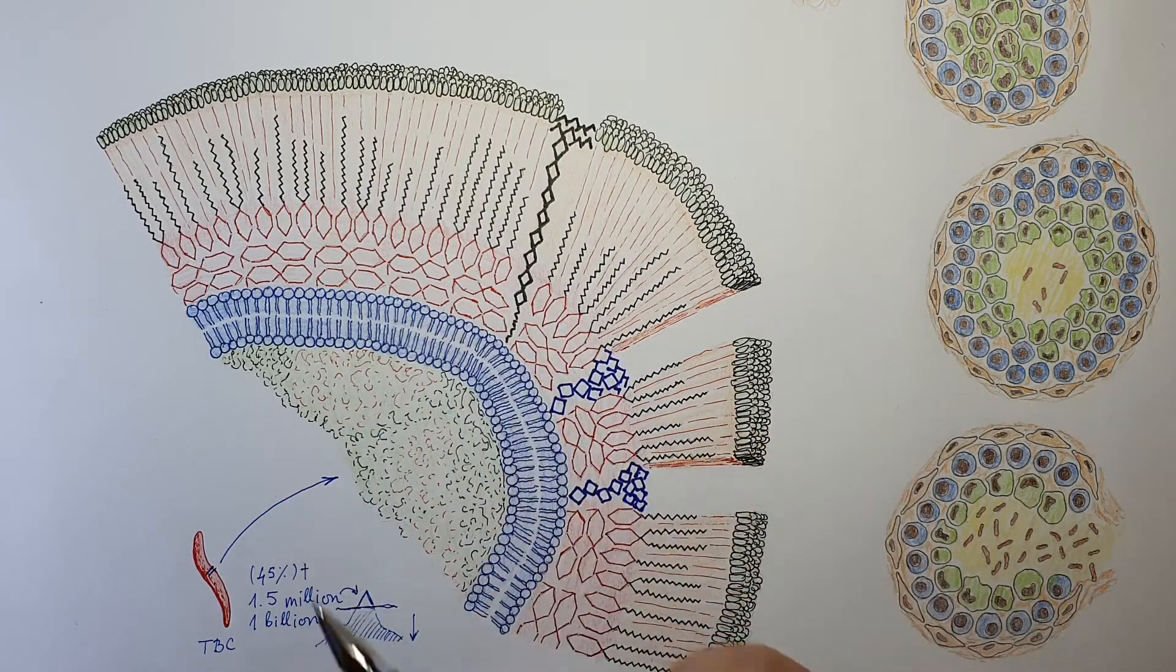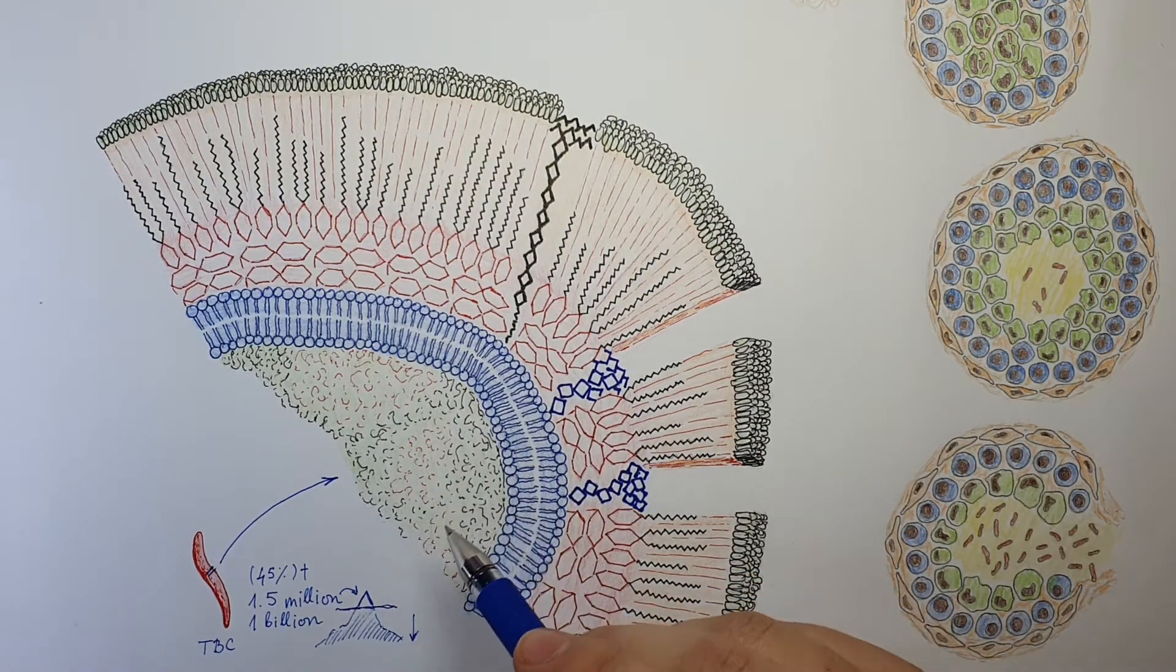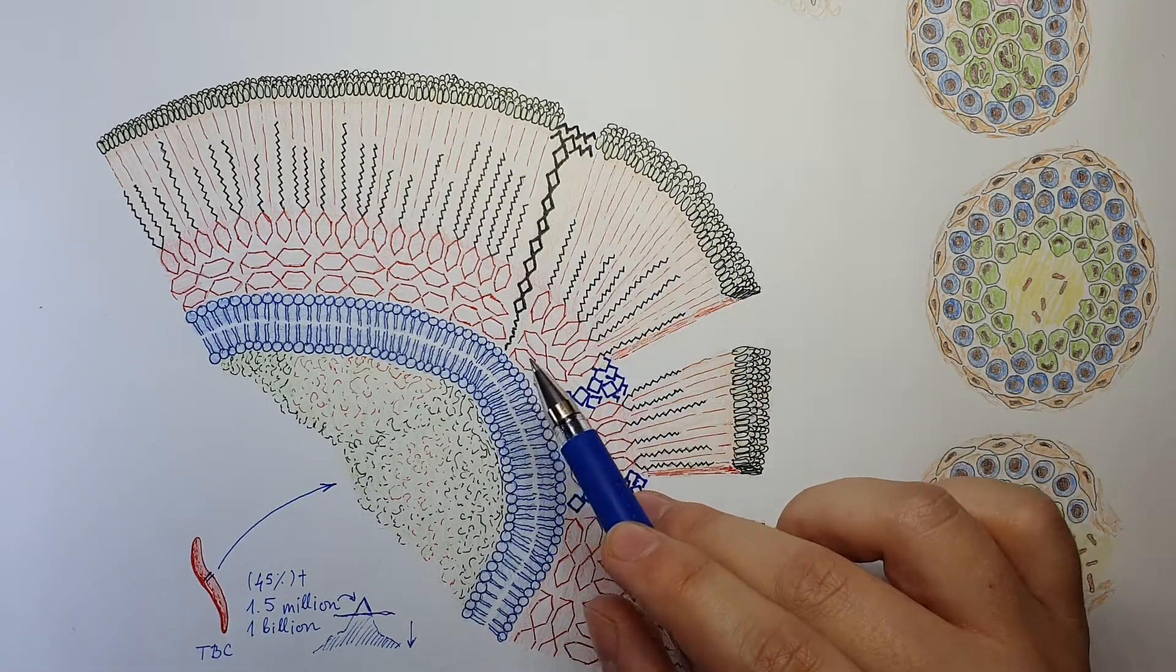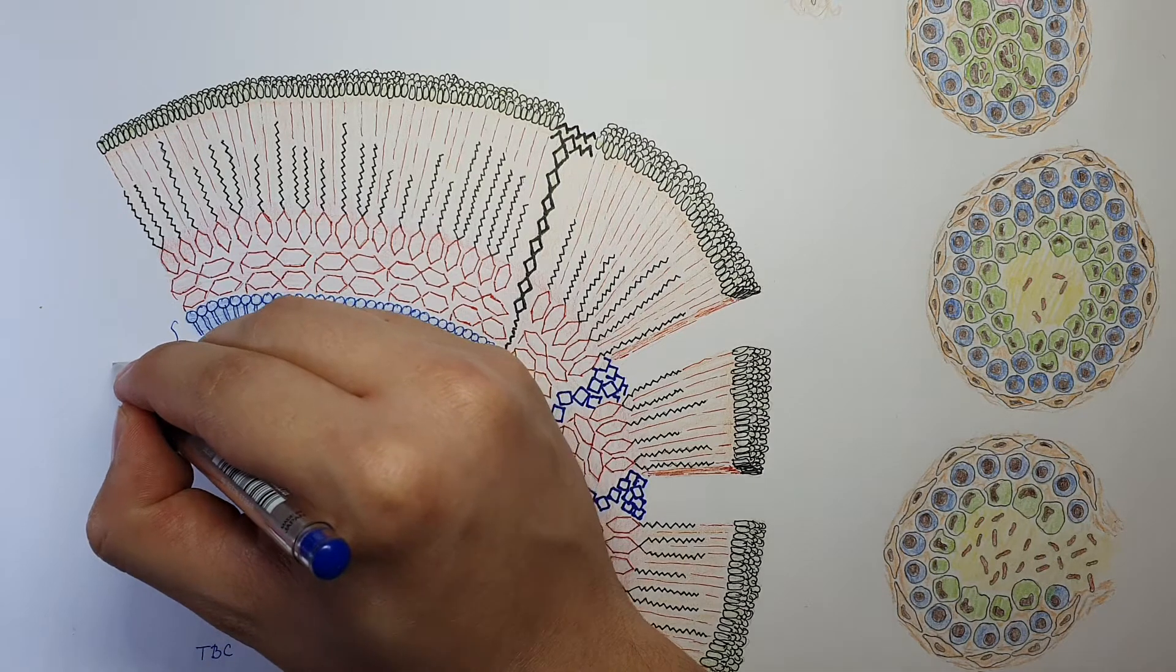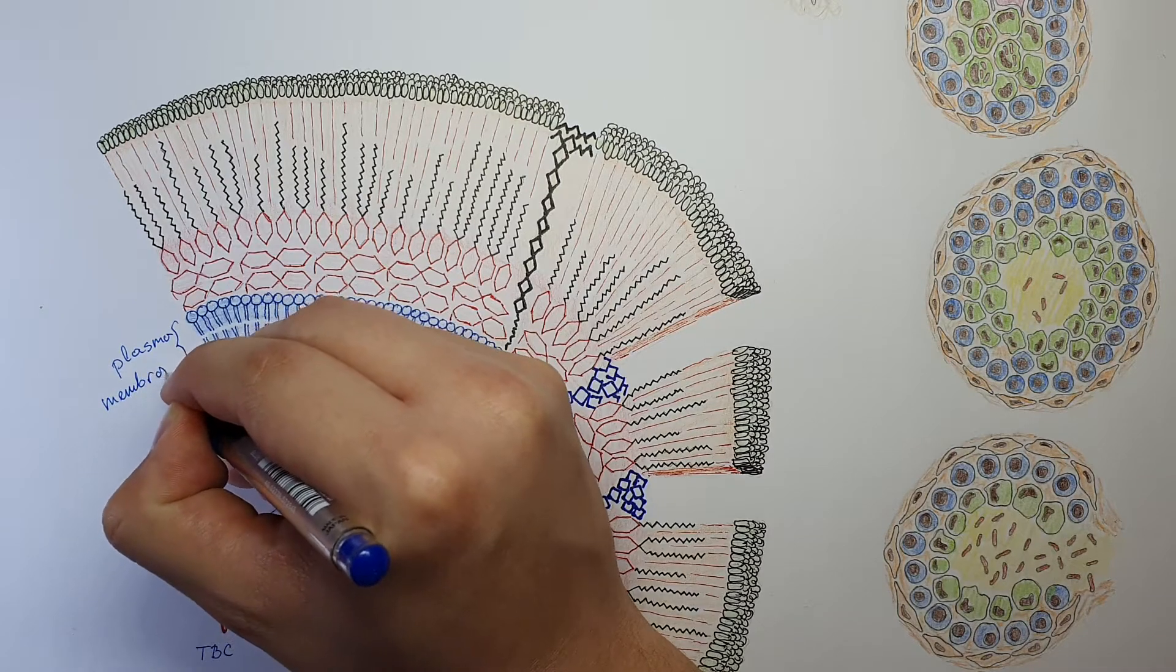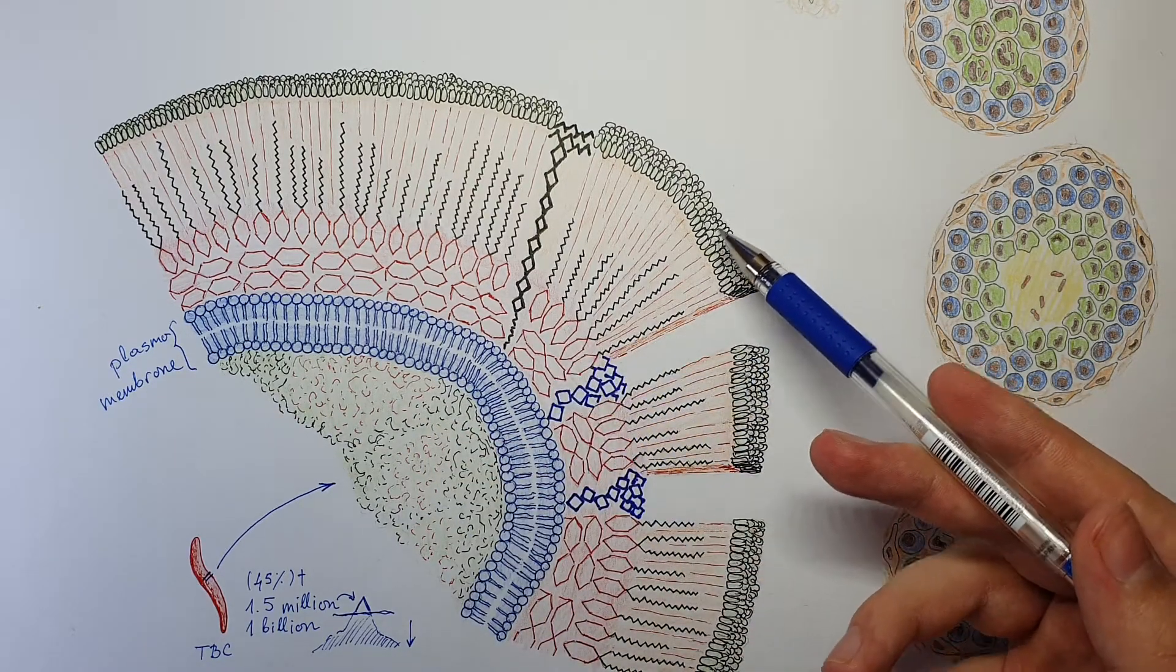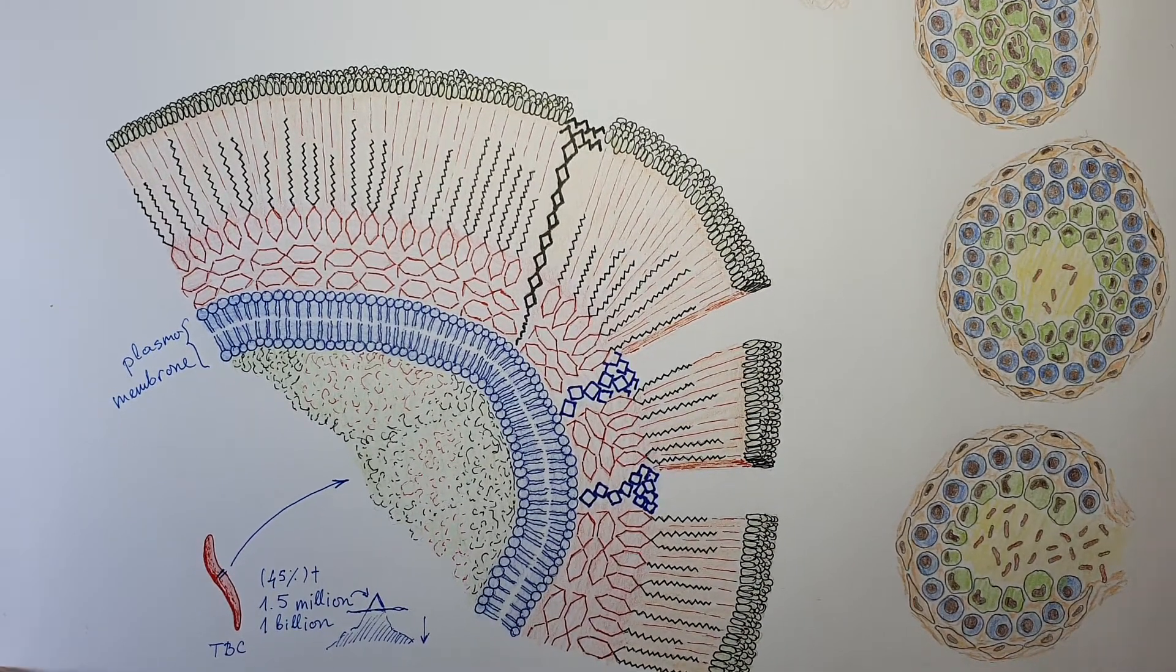So this is a simplified structure of tuberculosis. Obviously, the cytoplasm with the genetic material, but the interesting thing about tuberculosis is its cell wall. So first of all, we have, like any bacteria, we have the plasma membrane. So this is an ordinary plasma membrane.